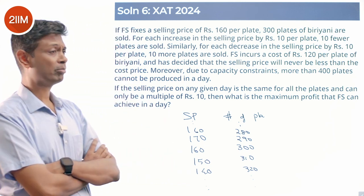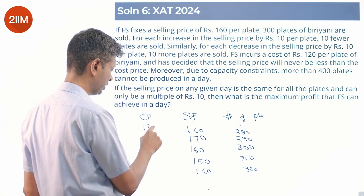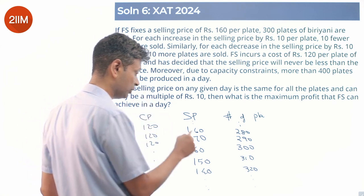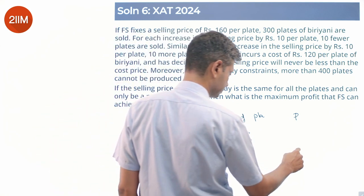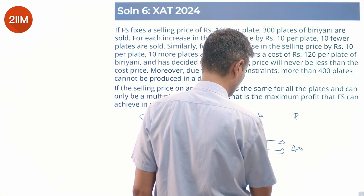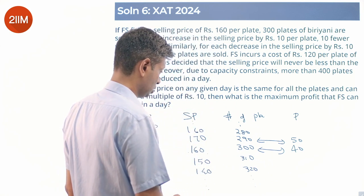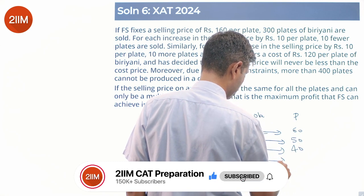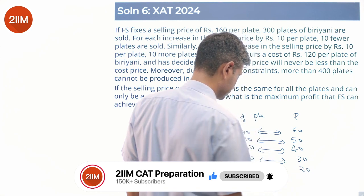The cost price is ₹120 throughout. So profit per plate at ₹160 selling price is ₹40; at ₹170 the profit per plate is ₹50, giving profit for 290 plates = 290×50. For 280 plates the profit per plate is ₹60; for 310 plates it's ₹30; for 320 plates it's ₹20 — and so on.